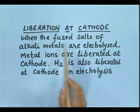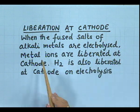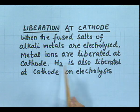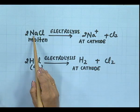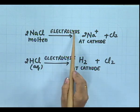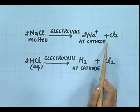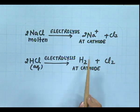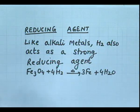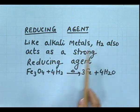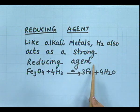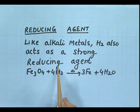Liberation at cathode: when the fused salts of alkali metals are electrolyzed, metal ions are liberated at the cathode. Hydrogen is also liberated at the cathode on electrolysis. Molten sodium chloride on electrolysis produces sodium ions at the cathode. Similarly, hydrogen chloride on electrolysis produces hydrogen at the cathode. Reducing agent: just like alkali metals, hydrogen also acts as a strong reducing agent — for example, iron oxide is reduced to iron using hydrogen. So we have seen many points of resemblance between hydrogen and alkali metals, but in some points it also differs from alkali metals.